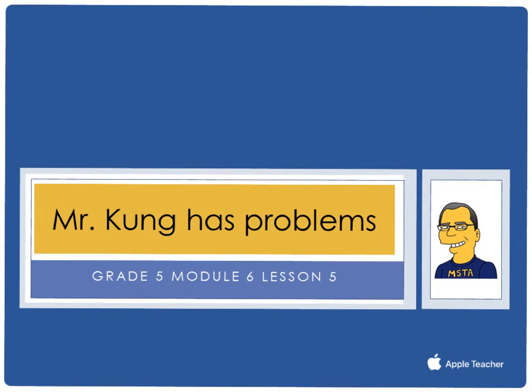Hello and welcome to another episode of Mr. Kong Has Problems. Tonight in grade 5, module 6, lesson number 5, we are working on investigating patterns in vertical and horizontal lines, and we are interpreting points on the plane as distances from the axes. Let's take a look at a couple problems from tonight's homework.